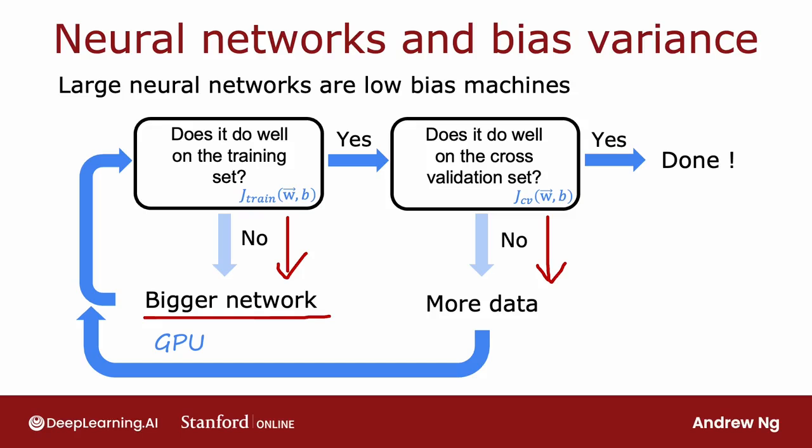And then of course, the other limitation is more data. Sometimes you can only get so much data and beyond a certain point, it's hard to get much more data. But I think this recipe explains a lot of the rise of deep learning in the last several years, which is for applications where you do have access to a lot of data. Then being able to train large neural networks allows you to eventually get pretty good performance on a lot of applications.